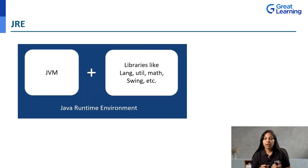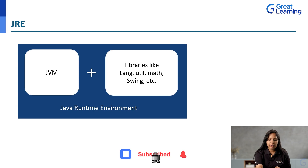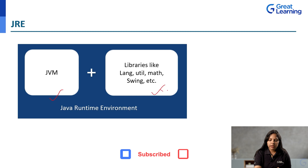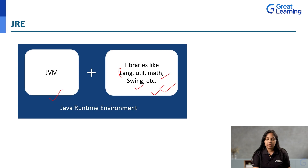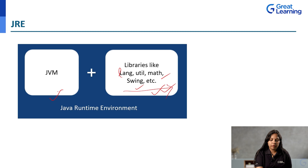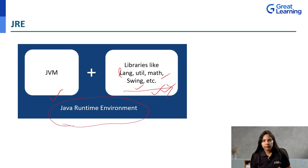Now, what is JRE? It stands for Java Runtime Environment. JVM we understood. Along with JVM, if you include certain library support from Java or Oracle — such as lang, util, math, swing — many inbuilt packages, called libraries, are there. Along with JVM and these libraries, this constitutes the complete Java Runtime Environment. That is your JRE.